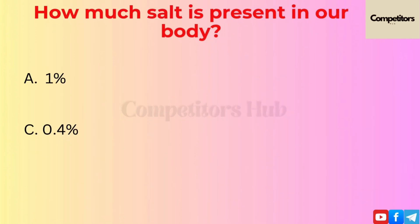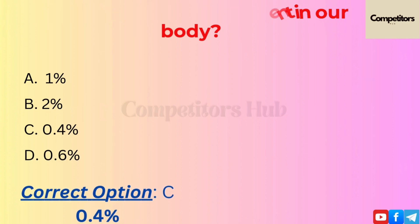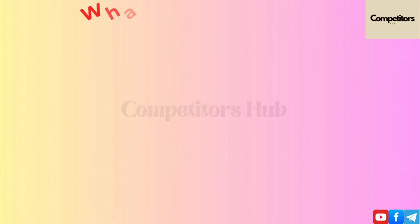The next question is: how much salt is present in our body? Option A: 1%. Option B: 2%. Option C: 0.4%. Option D: 0.6%. The correct option is C, 0.4%.